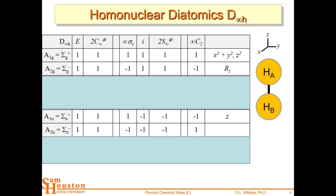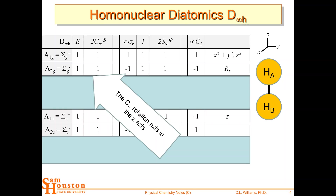Let's take the 1s orbital on atom A and see what happens as we go through each operation. For the C∞ rotation, if we rotate that 1s orbital on atom A, do we see a color change? No. The characters in the character table tell us if there's a color change: plus one means no color change — it stayed positive if positive, negative if negative. We have plus ones in that whole C∞ column, so that column alone is ambiguous.